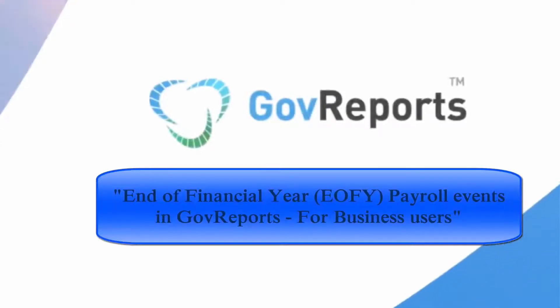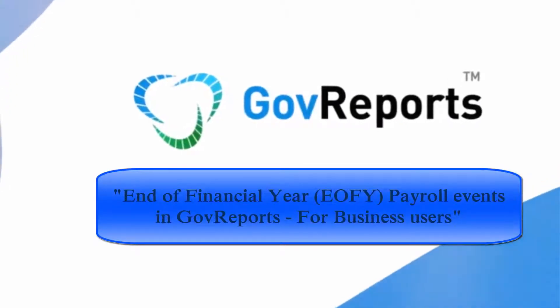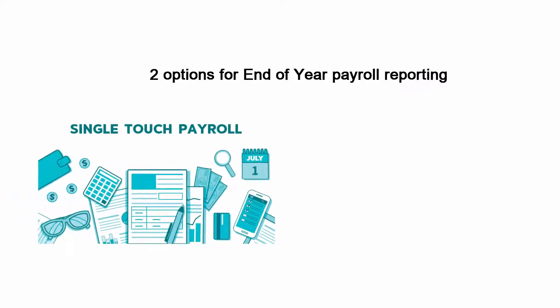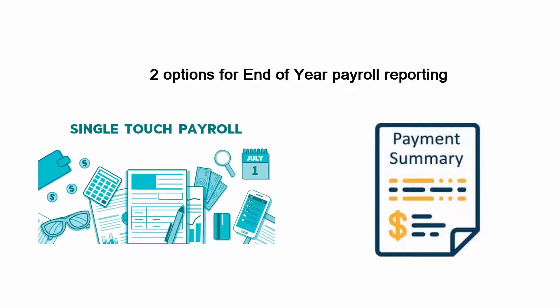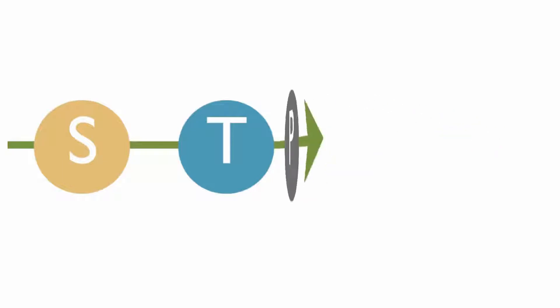As an independent reporting platform, and while the transition to STP is still ongoing for some businesses, GoF Reports offers two options for end-of-year payroll reporting: via Single Touch Payroll, and PAYG Payment Summary for businesses that have not yet transitioned to STP.